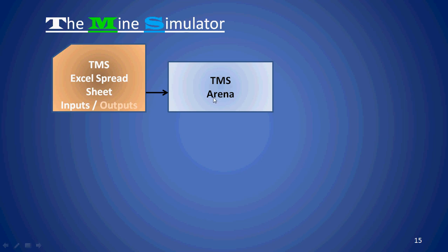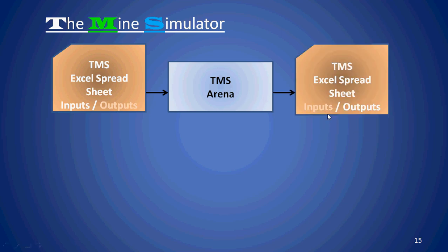ARENA enables me to go down to virtually a programming language to build those constructs, enabling TMS to track grade and tonnes right through the whole system — including how material blends within a truck dump when successive loads are combined. When you run TMS it produces a whole set of outputs which you load back into the same spreadsheet used for inputs. So for one particular run you have one spreadsheet with both inputs and outputs — for example, running a mine with 10 trucks gives you one spreadsheet, then you copy it, add an 11th truck, run it again, and get another spreadsheet.